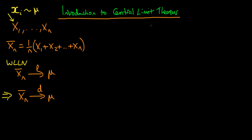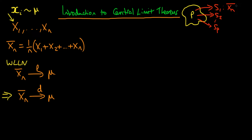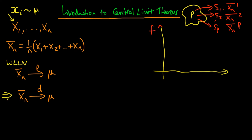But what does it actually mean to converge in distribution to a constant? The idea is that if I had a population and from that population I took many repeated samples — s1, s2, all the way up to sp — then for each of those samples I could calculate a value of x̄ₙ: from the first sample I'd get x̄ₙ₁, from the second x̄ₙ₂, and from the pth sample x̄ₙₚ. With all these values I could then draw a frequency distribution of them, which tells us the frequency of each different value of x̄ₙ obtained across all samples.